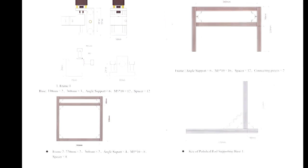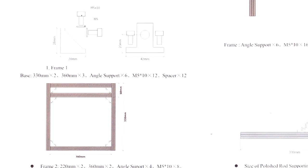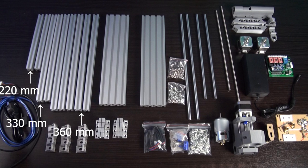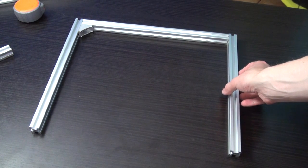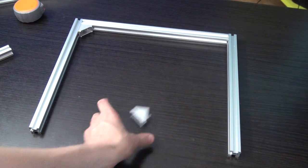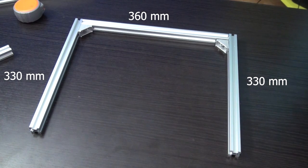Now it's time to start building the bottom part of the machine. It's called frame number 1 in the manual. We need 3 times the 360mm and 2 times the 330mm profiles. We start with the 2 shorter profiles on the outside and the longer one in the middle. Two corner brackets are used to join them together.